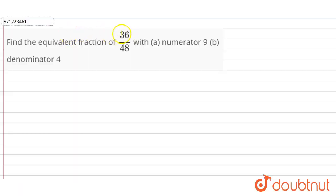have to find the equivalent fraction of 36 divided by 48 with numerator 9 and denominator 4. The fraction we have is 36 divided by 48 and we want in part A that the numerator should be 9.